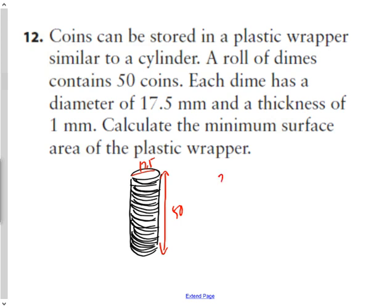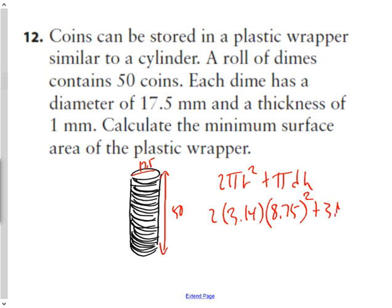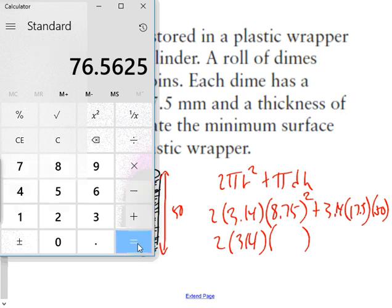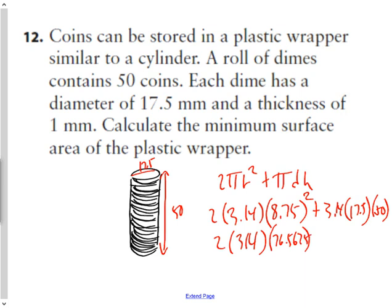Using 2πr² + πdh: the radius is half of 17.5, which is 8.75. First I calculate the exponent: 8.75² = 76.5625. Then 2 × 3.14 × 76.5625 gives the area of the two circular ends.